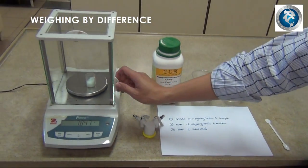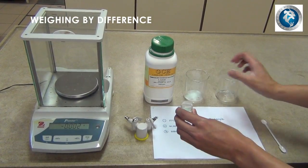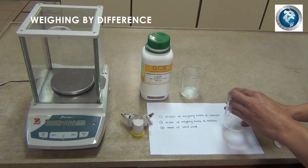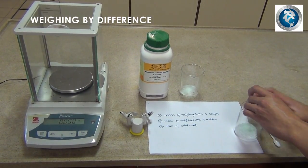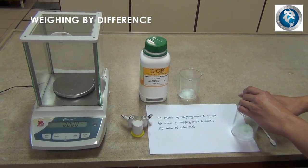After you are done, transfer the solid from the weighing bottle into the clean beaker. Make sure you tap the weighing bottle to transfer all the solid into the beaker.